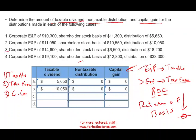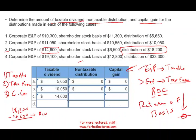Scenario three: distribution of $18,200 with corporate E&P of $14,600 and sufficient shareholder basis. The first $14,600 is a taxable dividend. The remaining $3,600 is non-taxable — it's a return of basis — because we have enough basis to cover it. So $14,600 plus $3,600 equals $18,200 accounted for, and capital gain is zero.